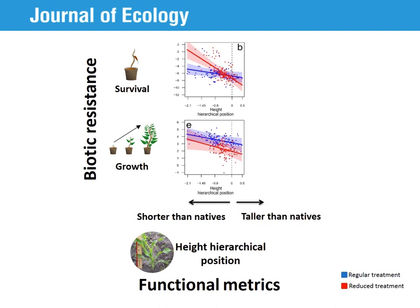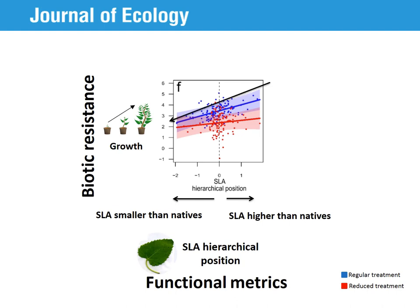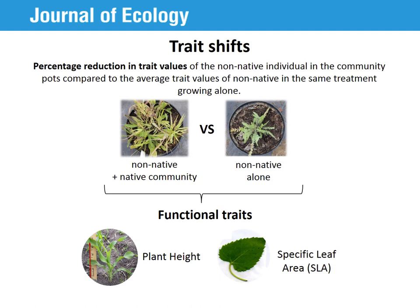Biotic resistance was also dependent on watering conditions. Even though drought lowered the resistance to the ornamental's growth, its effect on biotic resistance was not always straightforward. For example, the competitive advantage of being taller for ornamental survival was actually stronger under drought. Looking into SLA, we found that ornamental individuals with lower values, which are more conservative in their use of resources, could generally better endure competition from the natives, growing more than other individuals. Finally, we also quantified the effect of the native community on the trait values of the ornamentals by calculating their trait shifts.